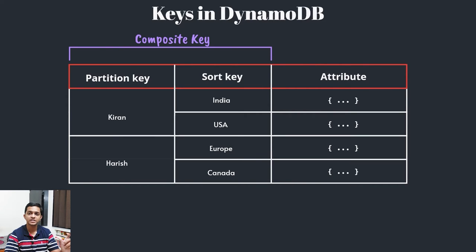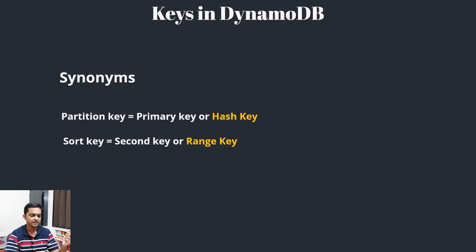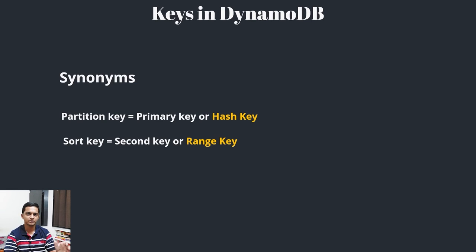The combination of partition key and sort key is called a composite key. Remember this for AWS certification exams like the Database Specialist. The partition key is also called a primary key or hash key, because items are hashed based on it — though the highlighted orange parts refer to AWS backend terminology you don't need to worry about.